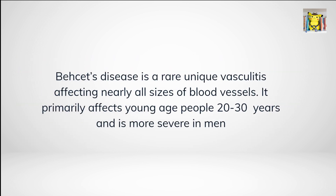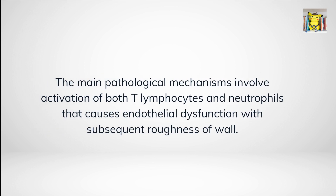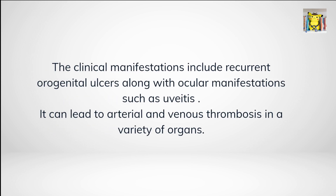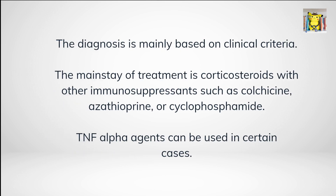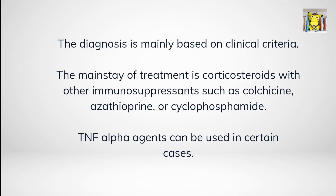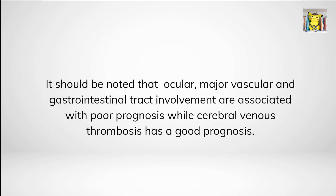In summary, Behçet's disease is a rare, unique vasculitis affecting nearly all sizes of blood vessels. It primarily affects young people aged 20 to 30 years and is more severe in men. The main pathological mechanisms involve activation of both T-lymphocytes and neutrophils, causing endothelial dysfunction. Clinical manifestations include recurrent orogenital ulcers and ocular findings such as uveitis. It can lead to arterial and venous thrombosis in a variety of organs. Diagnosis is mainly based on clinical criteria. Treatment mainstays are corticosteroids with immunosuppressants such as colchicine, azathioprine, or cyclophosphamide. TNF-alpha agents can be used in certain cases. Notably, ocular, major vascular, and gastrointestinal tract involvement are associated with poor prognosis, while cerebral venous thrombosis has a good prognosis.